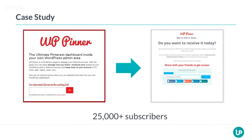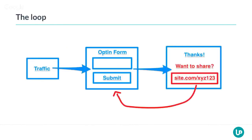You split test — at random, a visitor will see version A or version B, and the system keeps track to see which one converts best. After a while, you know which one is converting better. Let's say one converts at 25% and the other at 35%. That means you get 10 extra subscribers from every 100 visitors — which is actually a 40% improvement. A 40% improvement is good.